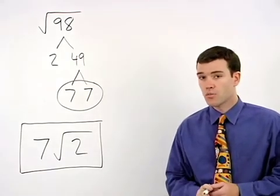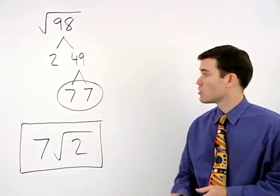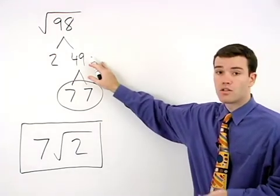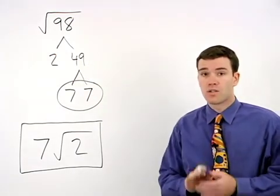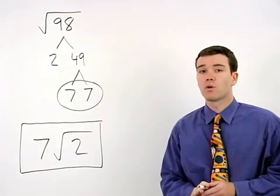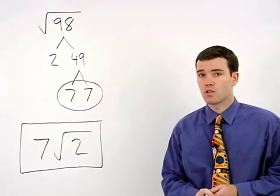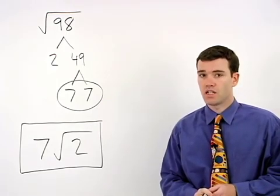Obviously it helps to be able to recognize your perfect squares as you make your factor tree. So in the next example, let's review the perfect squares for the numbers between 1 and 16.